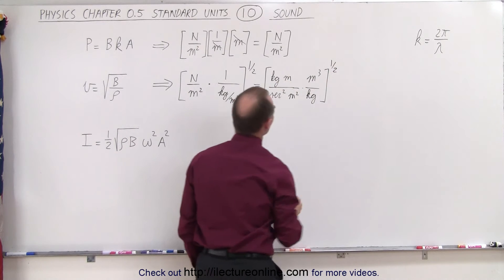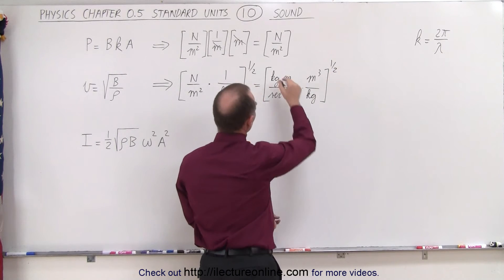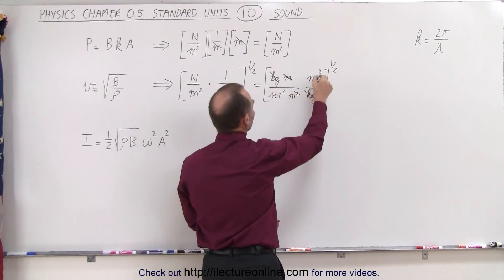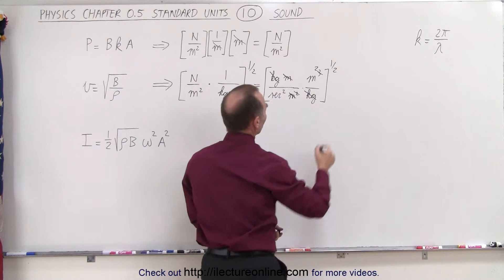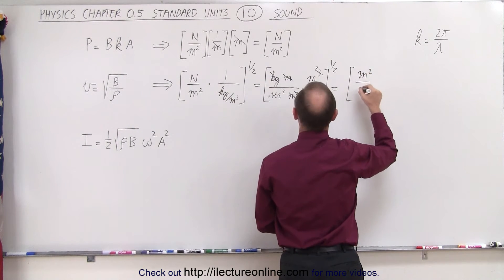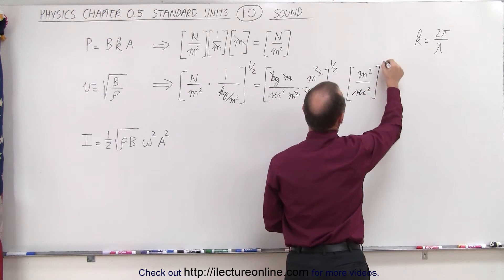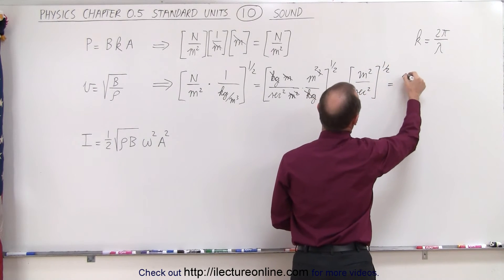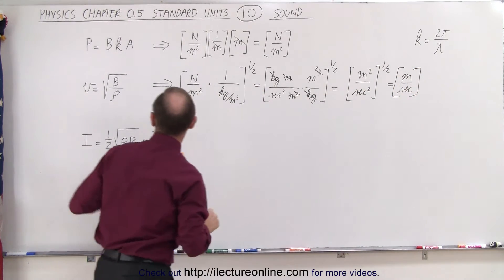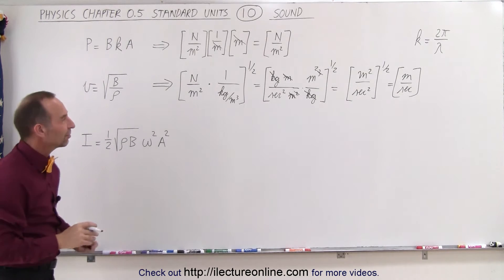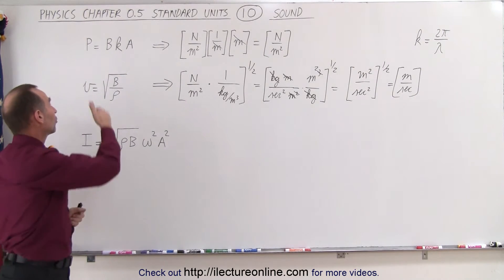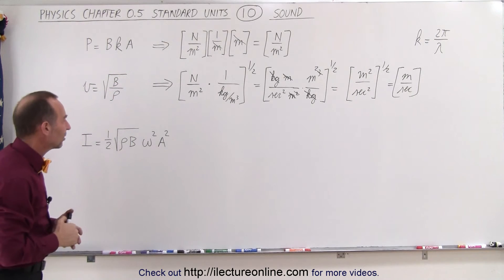Now we simplify: kilograms cancels kilograms, one meter cancels leaving meters squared, and we're left with meters squared per second squared under the radical. Taking the square root gives meters per second — exactly the units we were hoping for. So this confirms that v = √(B/ρ) is indeed a correct expression for the velocity of sound in air.